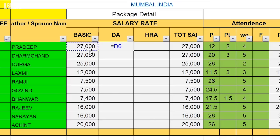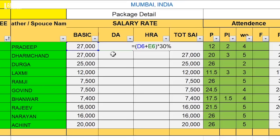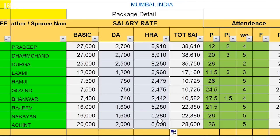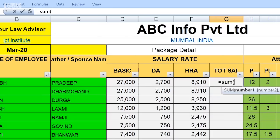If you want to calculate DA, you multiply the basic by 10%, so DA is calculated at 10%. Similarly, if you want to calculate HRA, your company calculates it as Basic plus DA multiplied by 30%. So first you calculate Basic plus DA, then multiply by 30%, so HRA is calculated. Now I will drag it down to apply the formula. Then for the total rate, I will use the SUM formula to add all three components — Basic, DA, and HRA. You can drag it down and apply it to all rows.